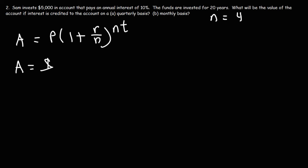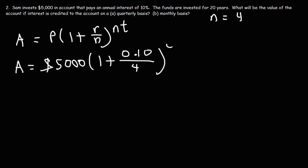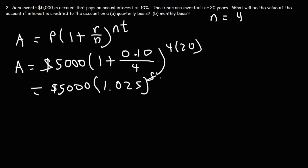P, the principal, is $5,000. The interest rate is 10%, so 0.10 as a decimal. N is 4, and T is 20 years. Step by step: 0.10 divided by 4 is 0.025; add 1 to get 1.025. And 4 times 20 is 80. So it's $5,000 times 1.025 raised to the 80th power. The value of the investment 20 years later will be $36,047.84.